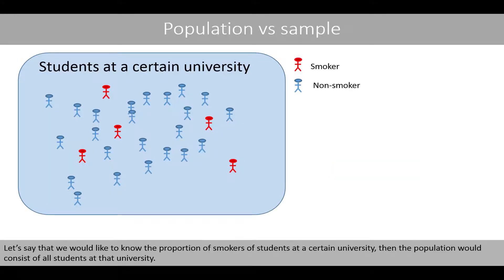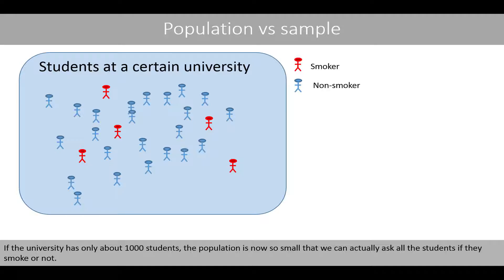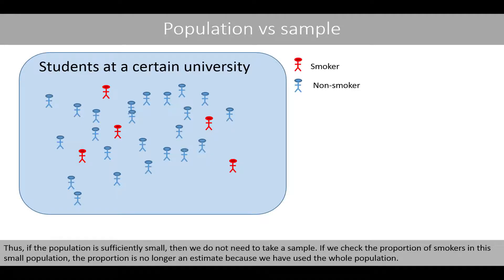Let's say that we would like to know the proportion of smokers among students at a certain university. Then the population would consist of all students at that university. If the university has only about 1,000 students, the population is now so small that we can actually ask all the students if they smoke or not. Thus, if the population is sufficiently small, then we do not need to take a sample. If we check the proportion of smokers in this small population, the proportion is no longer an estimate because we have used the whole population.